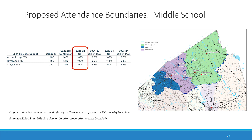The draft one proposed attendance boundaries for middle schools are shown on slide 16. The range of utilization for the proposed boundaries has decreased to 13 points from 33 points, with 109 percent utilization at Riverwood and 96 percent utilization at Clayton.